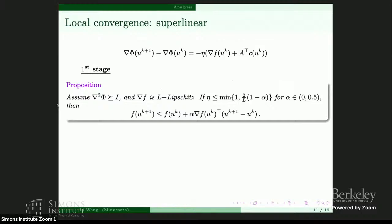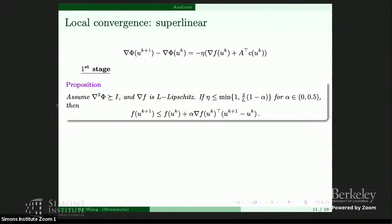Now we move on to the local convergence. The goal is to show that as long as phi contains enough information of f, we can get super-linear convergence. The proof follows the two-stage proof for Newton-type methods. The first stage proposition states: if phi is 1-strongly convex with respect to the standard norm, grad f is Lipschitz, and the iteration step is properly chosen to be smaller than the minimum of the two, then the objective function decreases sufficiently. This alpha is between zero and a half — also called the sufficient decrease condition.